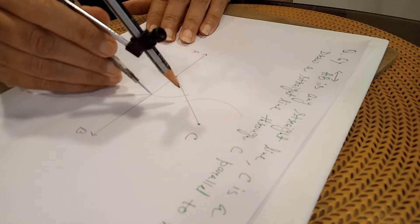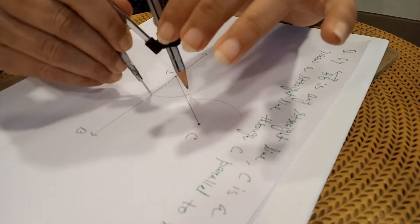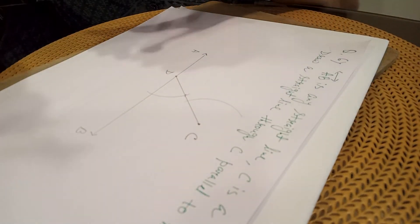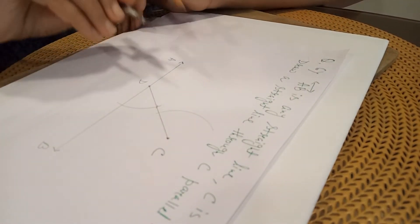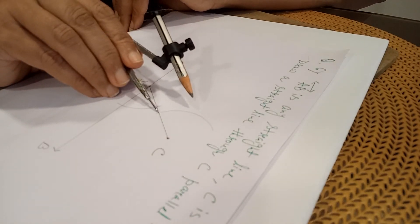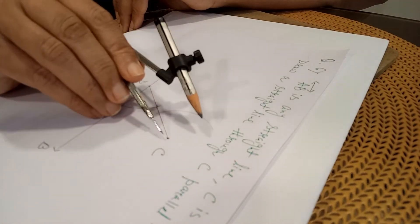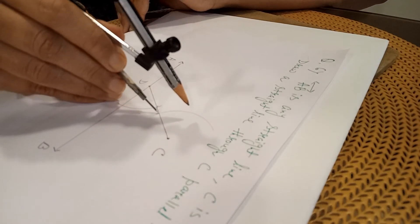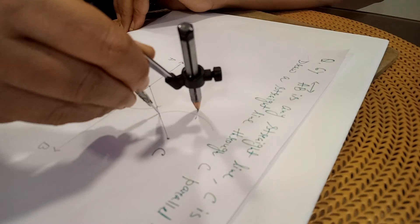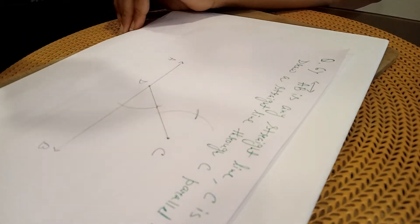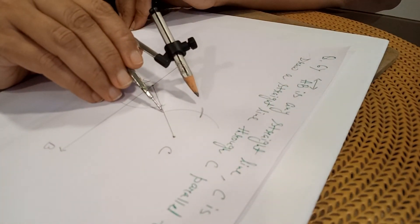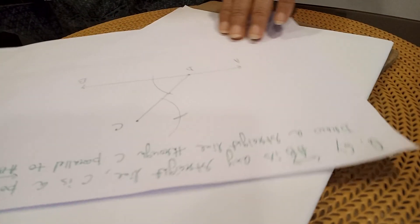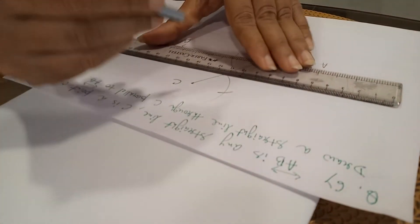Then, take the inside measurement of this arc. Then, where to place? You will place here, not here. Now, I am placing over here and drawing another arc. Where I have placed? Here only. Then, I will join with C, I will join that.